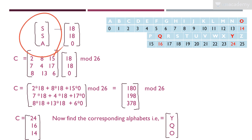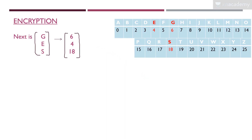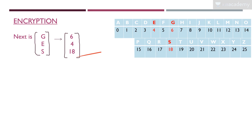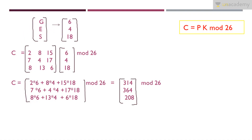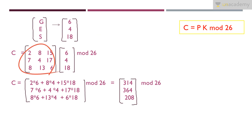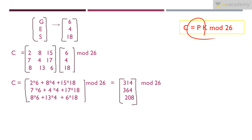The last trigraph is GES, with G=6, E=4, S=18, giving vector [6, 4, 18]. Applying C = K × P mod 26 — and importantly, note that matrix multiplication is not commutative: K×P is not equal to P×K. The correct order is key first, then plain text: K × P.